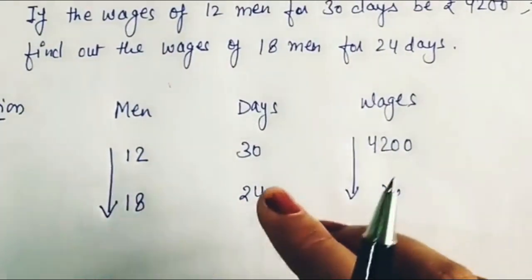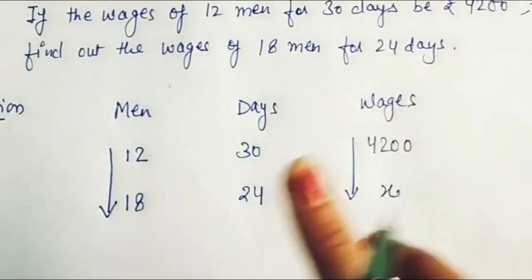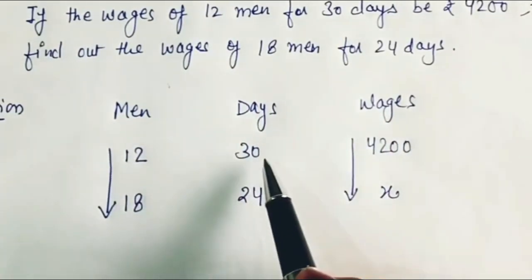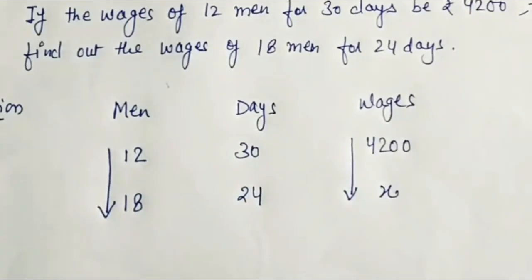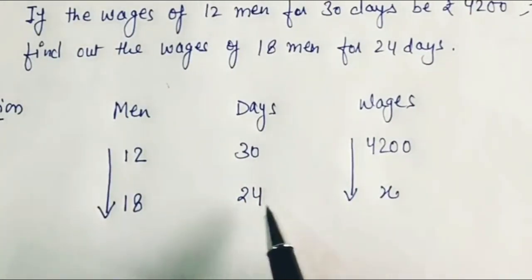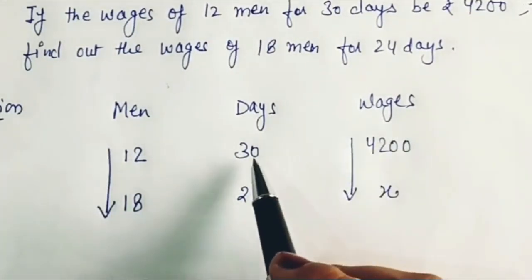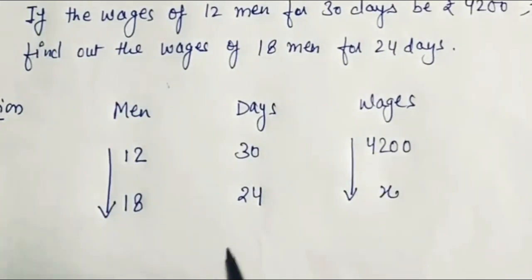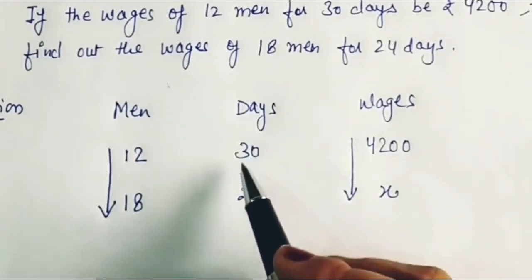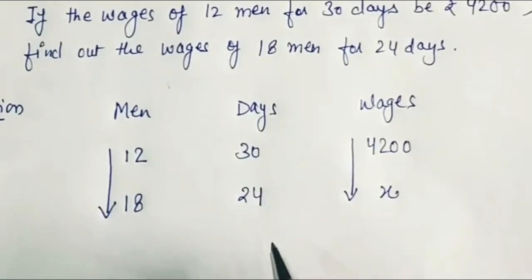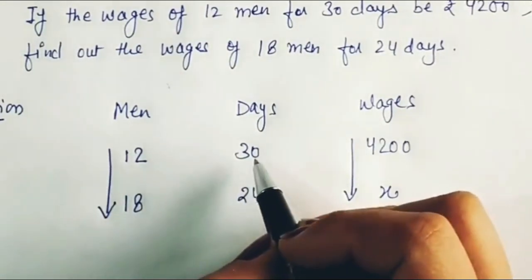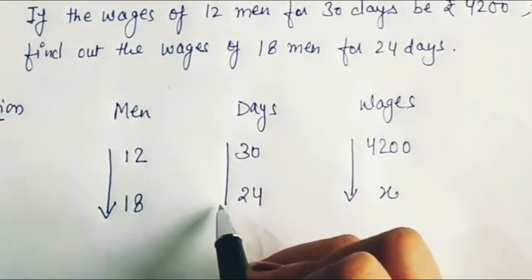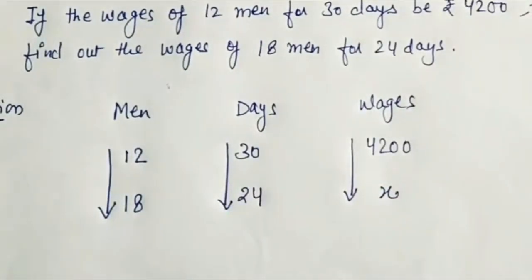In the second comparison, we compare days and wages. The wages for 30 days are Rs. 4200, so wages for 24 days will be less than 4200. Between 30 and 24, the smaller digit is 24, so our arrow pointer will point towards 24.